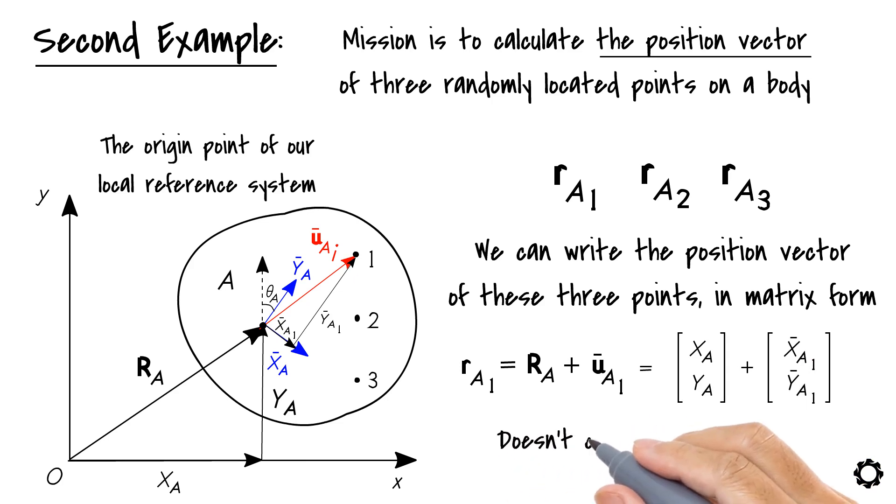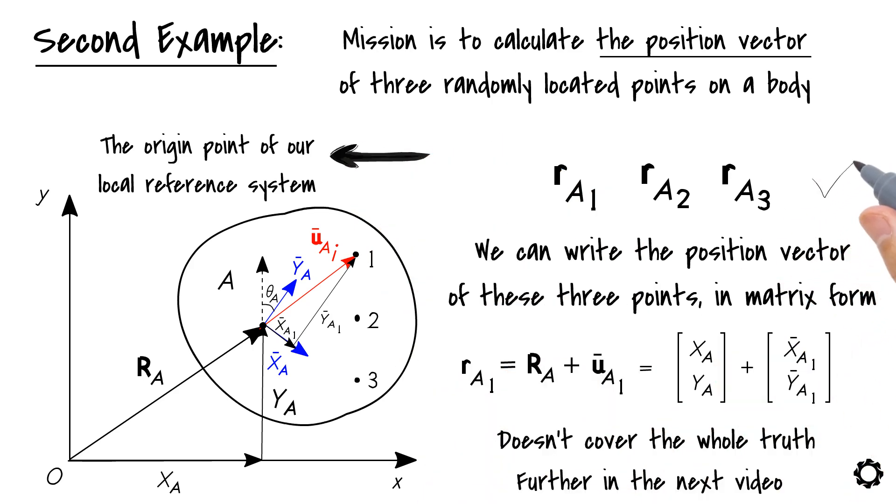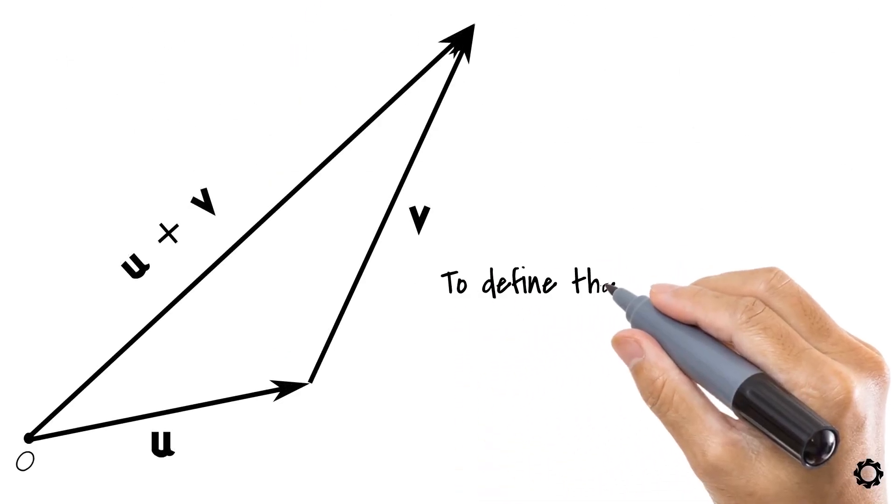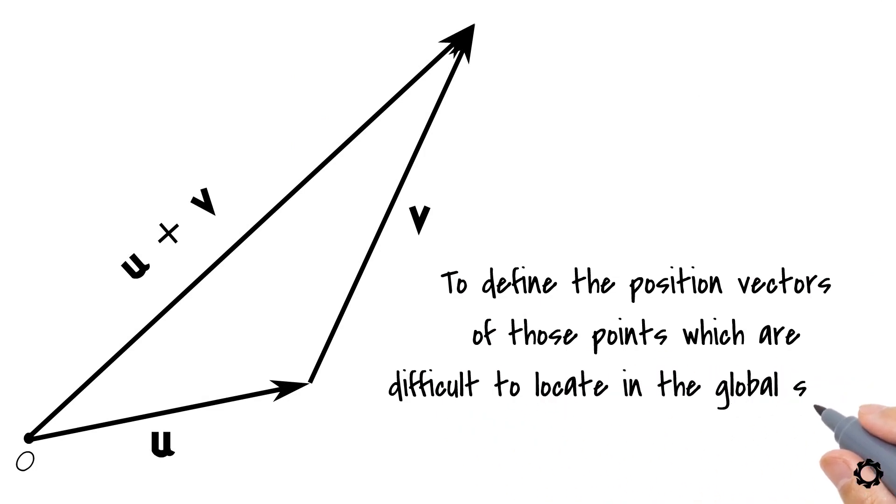Notice that this equation doesn't cover the whole truth, and we will explain it further in the next video. We used one known point, the origin of the local reference system, to locate the other three points. You see that it is much easier to use this sort of triangulation to define the position vectors of those points which are difficult to locate in the global system.